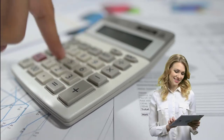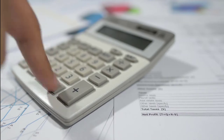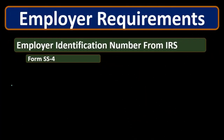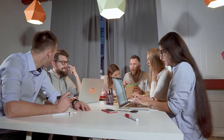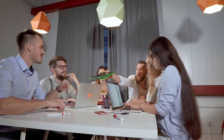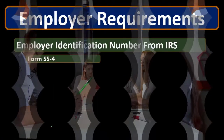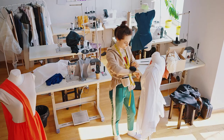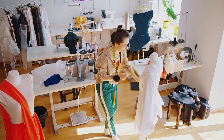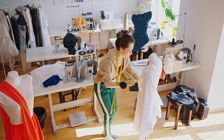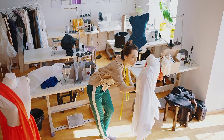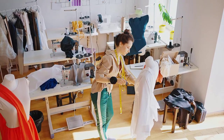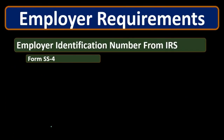The employer identification number can also be useful for sole proprietors who want to process 1099 forms without having to use their social security number in certain documentation. Even if we don't have any employees — as a sole proprietor we are kind of our own employee — we may want a number representing our business other than our social security number, and that could be the employer identification number.